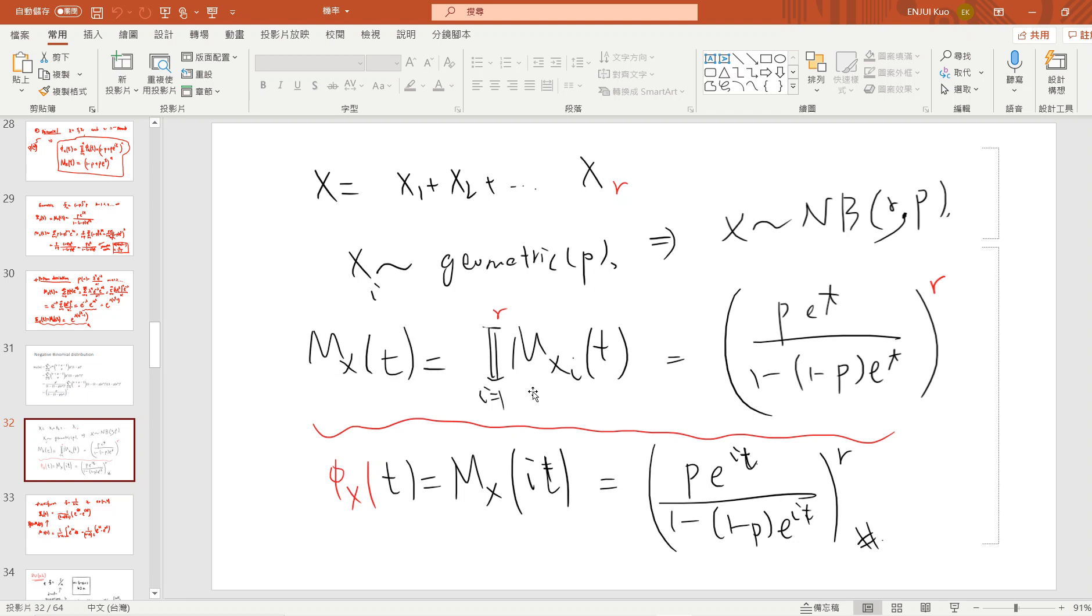Then you just take the product of all your moment generating functions of the geometric distribution, so you get pe^t over (1-(1-p)e^t) to the power r, then you get your answer. And for the characteristic function, it's just defined as the moment generating function by replacing t with it, so it's pe^{it} over (1-(1-p)e^{it}) to power r. Okay, so this is the first proof.